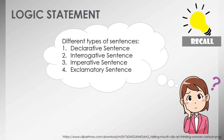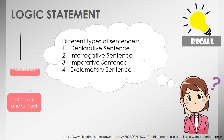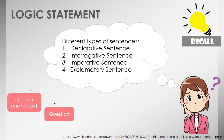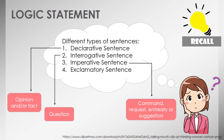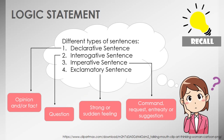Defining each of these types of sentences: firstly, the declarative sentence is a sentence that states or declares facts or opinions. Interrogative sentence is a sentence that asks a question. For the imperative sentence, it is a sentence that expresses a command, a request, an entreaty, or suggestion. And lastly, the exclamatory sentence is defined as a sentence that expresses strong or sudden feeling.